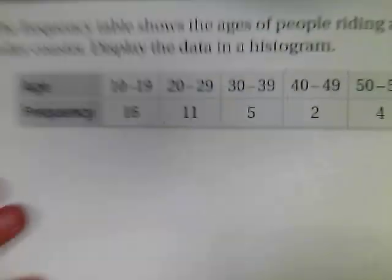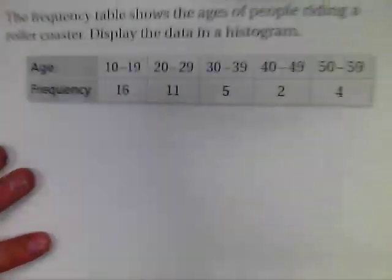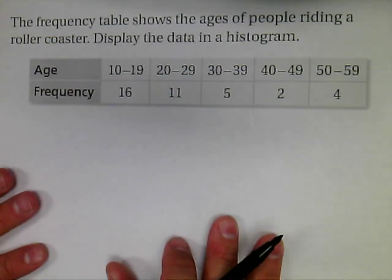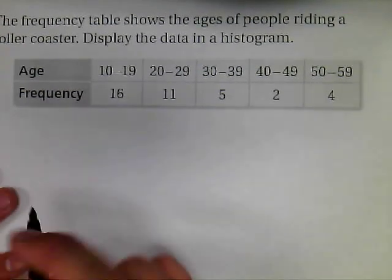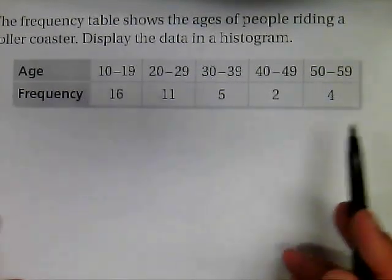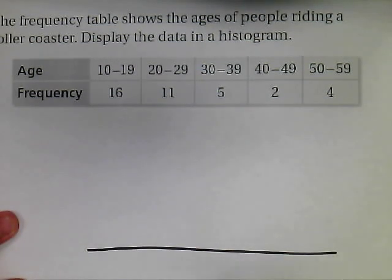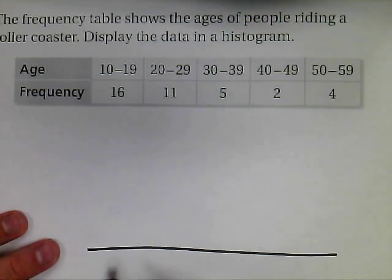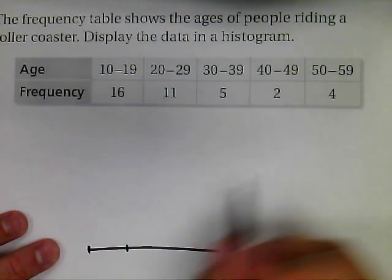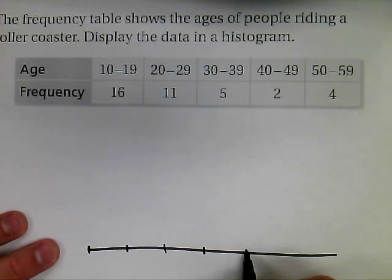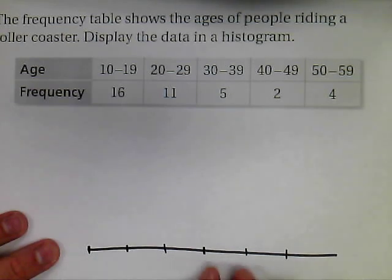We're going to create a histogram using data showing the ages of people riding a roller coaster. We've already got our frequencies and intervals determined. We'll make a straight x-axis and separate it into five groupings, making those divisions first so I have five equally spaced sections as a guideline for my bars.